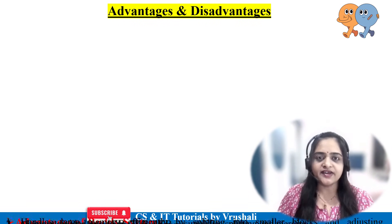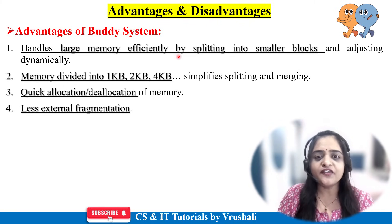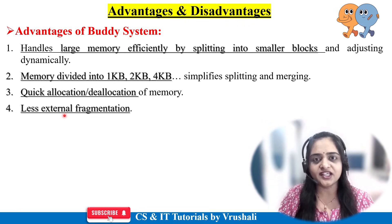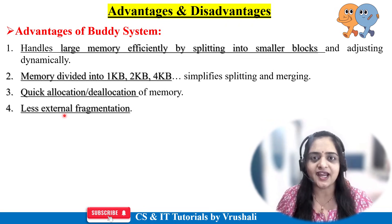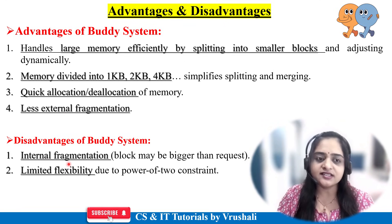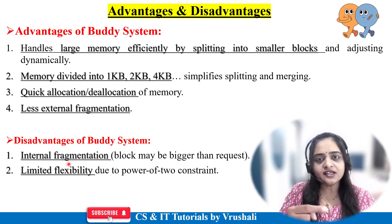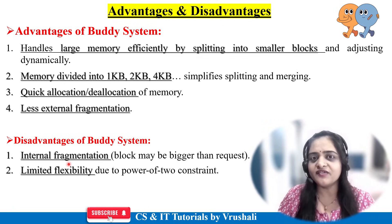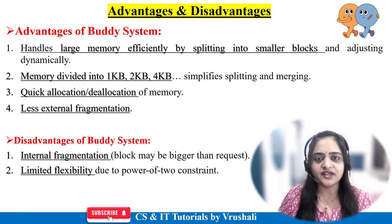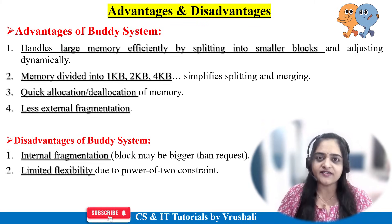What are the advantages and disadvantages of the Buddy System? One main advantage is efficient memory use, because the system splits blocks into equal parts in a structured manner — 1, 2, 4, and so on. There is also quick allocation and deallocation, and less external fragmentation, meaning less memory scattering. The main disadvantage is internal fragmentation: for example, Process 1 uses only 18 KB from a 32 KB block, so the remaining 14 KB is leftover waste. Another disadvantage is limited flexibility, because memory blocks can only be divided in powers of 2, which reduces flexibility.